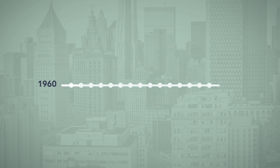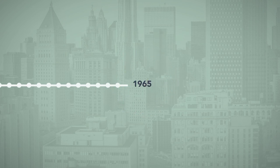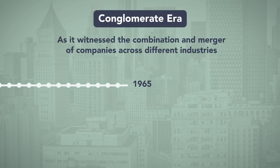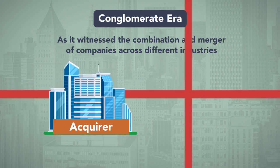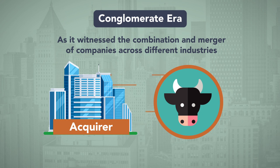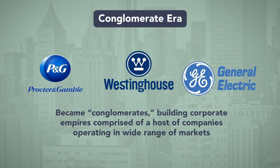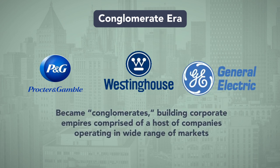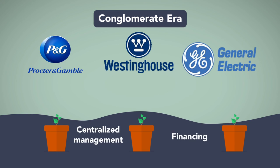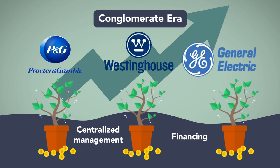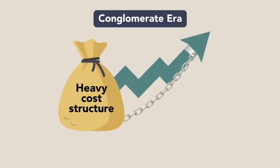The 1960s saw a second phase of merger activity. This period, beginning around 1965, is often referred to as the conglomerate era as it witnessed the combination and merger of companies across different industries. Rather than concentrating in one industry, which might have been stopped by antitrust laws, companies acquired other companies outside their core markets. Companies such as Procter & Gamble, Westinghouse, and General Electric became conglomerates, building corporate empires comprised of a host of companies operating in a wide range of markets. They would acquire smaller companies and grow them through centralized management and financing. If successful, the conglomerate would realize increased revenue and profits and higher stock prices.